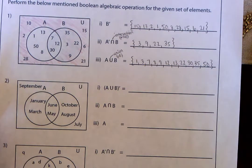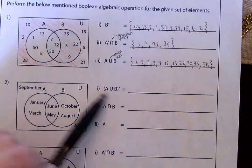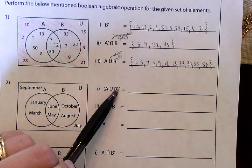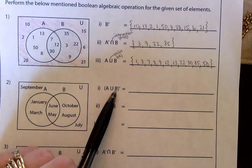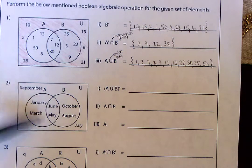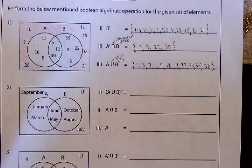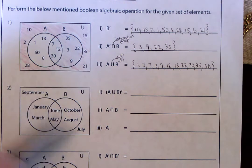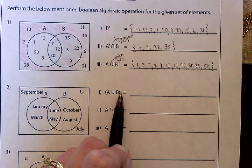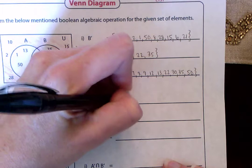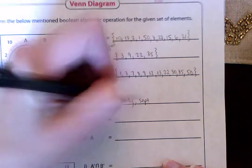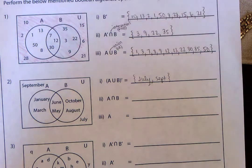Now let's look at this next one. It's kind of like the one before but it's the complement of it — so it's saying A or B, but then the complement means: which ones are not in A or B? If you look at the diagram, which ones are not in circles A or B? Outside of the circles, you've got July and September. That's what the complement symbol means — not in A or B. So the answer is July and September.